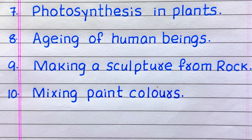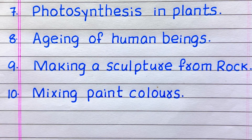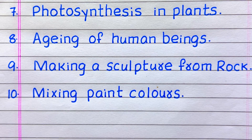Seventh example of an irreversible change is photosynthesis in plants. Eighth, aging of human beings. Ninth, making a sculpture from rock. Tenth, mixing paint colors.